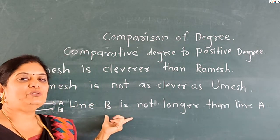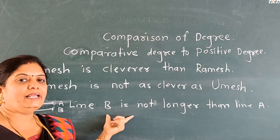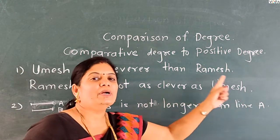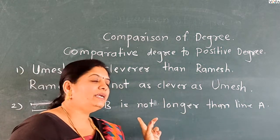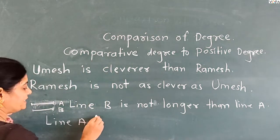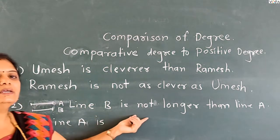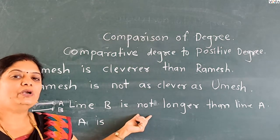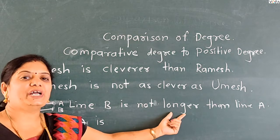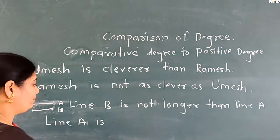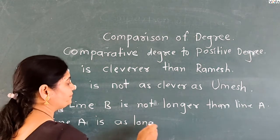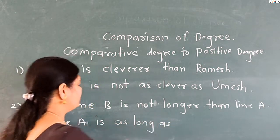The sentence is: Line B is not longer than line A. Here we are comparing two lines. We remove 'not' and use the positive form of the adjective in 'as...as': as long as.